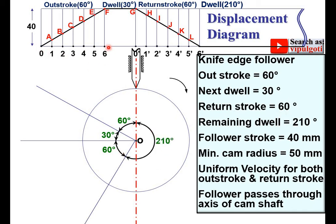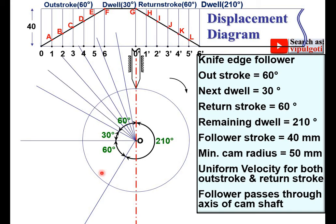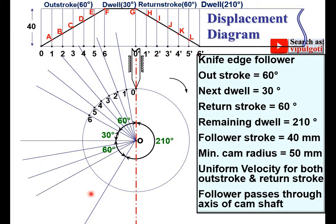Since the outstroke was divided into 6 equal parts in the displacement diagram, here also divide the 60-degree outstroke into 6 equal parts using a protractor — each division will be 10 degrees. Give the names 0, 1, 2, 3, 4, 5, 6. Similarly, divide the returnstroke 60-degree sector into 6 equal parts and give the names 0', 1', 2', up to 6'.